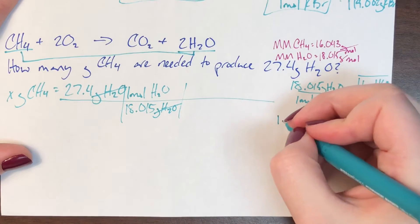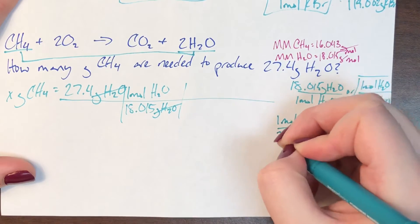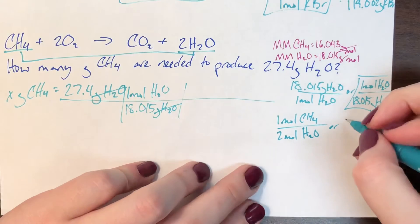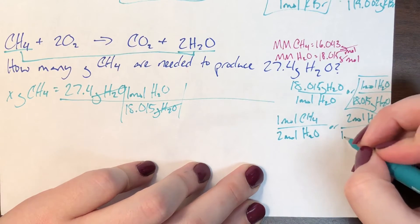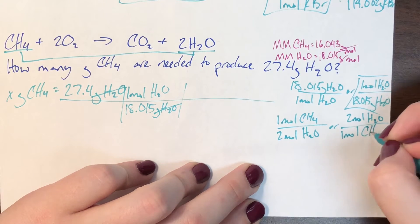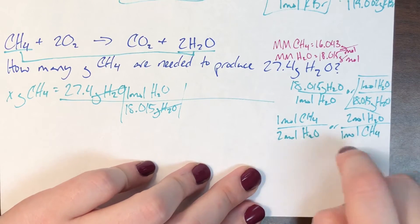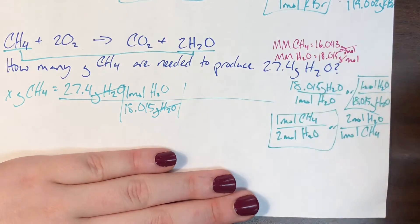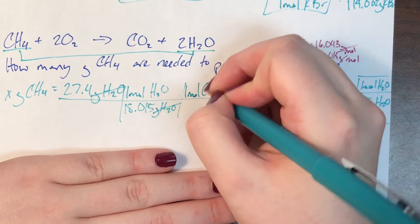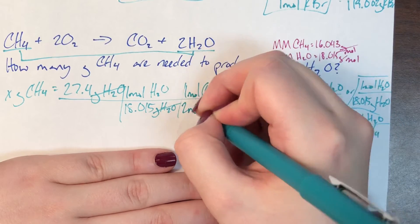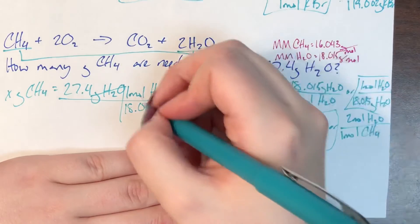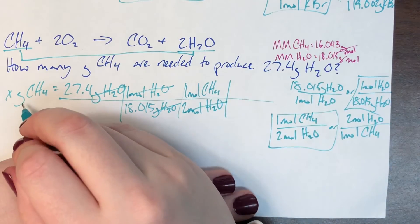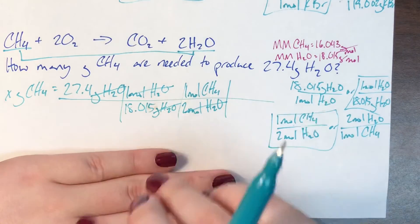Now I need to switch from water to methane, so I need the mole-to-mole ratio. For every 1 mole of CH4 there are 2 moles of H2O, or for every 2 moles of water there is 1 mole of methane. I pick the version that cancels moles of water — 1 mole CH4 on top, 2 moles H2O on the bottom — leaving moles of CH4. I'm in the right compound but not the right unit.